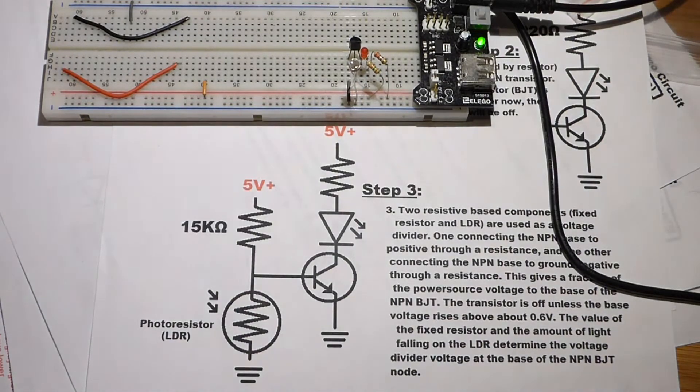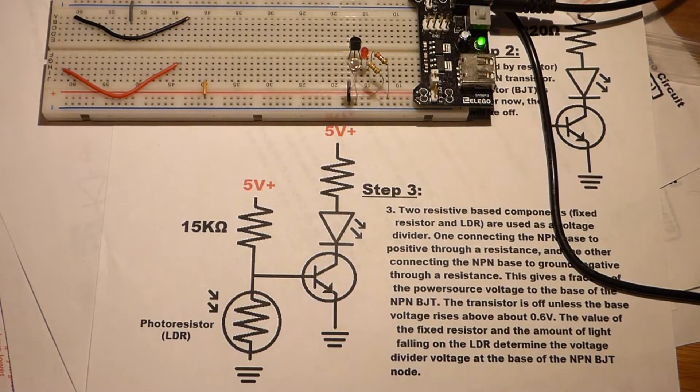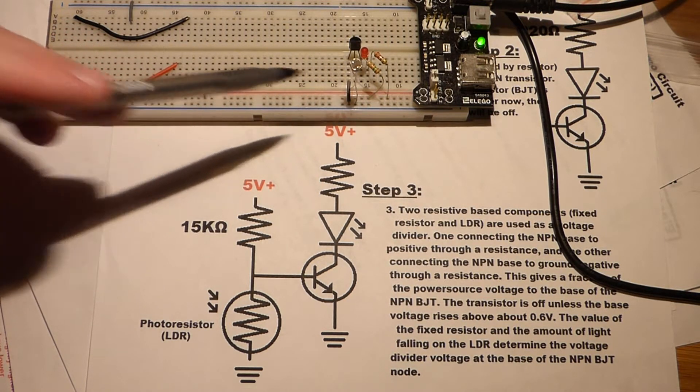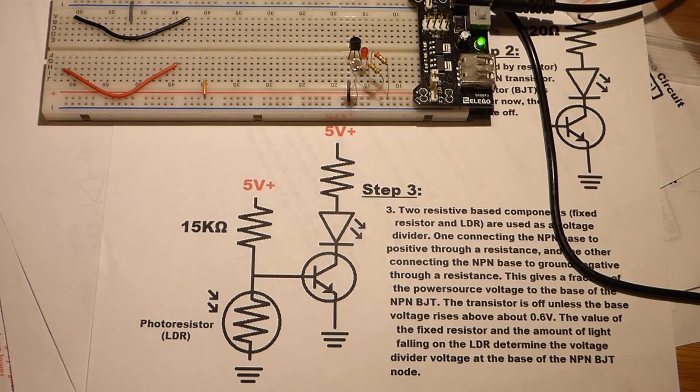We're at the medium brightness. Now I put it to the lamp's full brightness. And of course, the LED stays off. So the LED being on or off is determined by how much light we have coming to the light-dependent resistor.